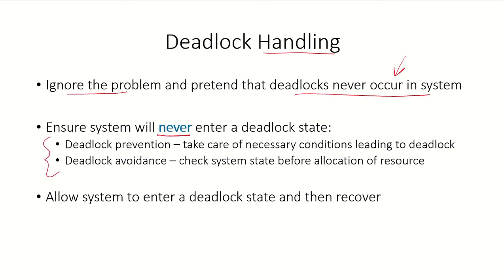Another way of handling deadlocks is to ensure that the system will never enter a deadlock state. For this there are two approaches: deadlock prevention and deadlock avoidance. In prevention, we ensure that the necessary conditions which lead to deadlock are not satisfied — at least one of the four necessary conditions must not be satisfied. In deadlock avoidance, before allocating a resource to a requesting process, it is checked whether the system will be in a safe state or not.